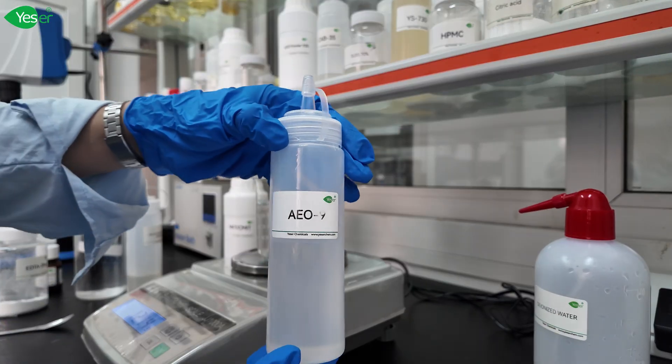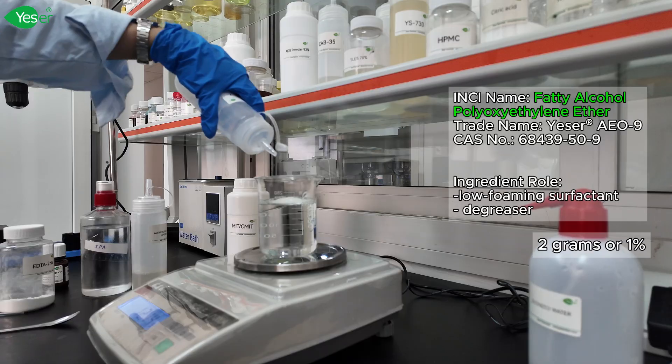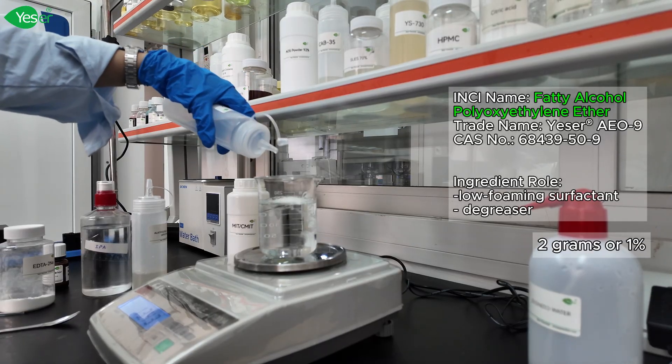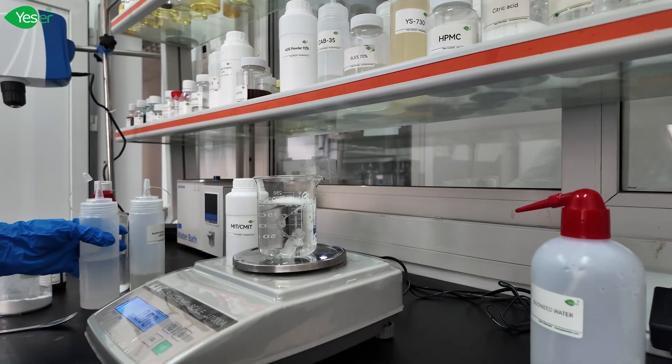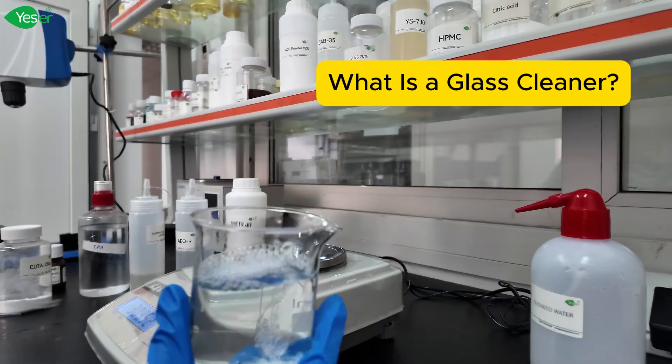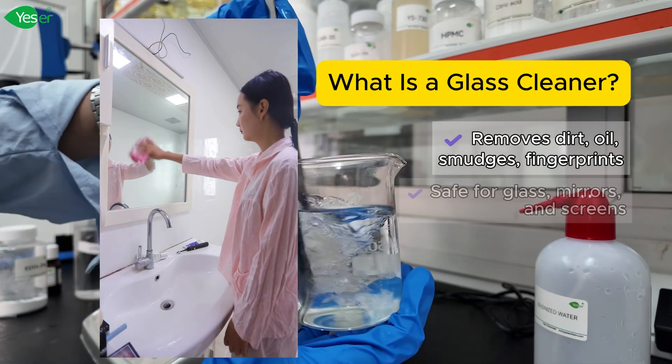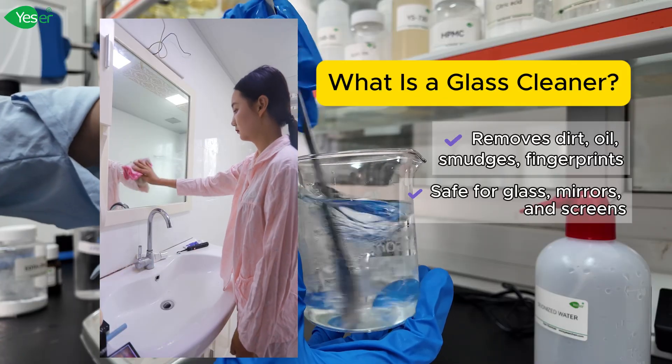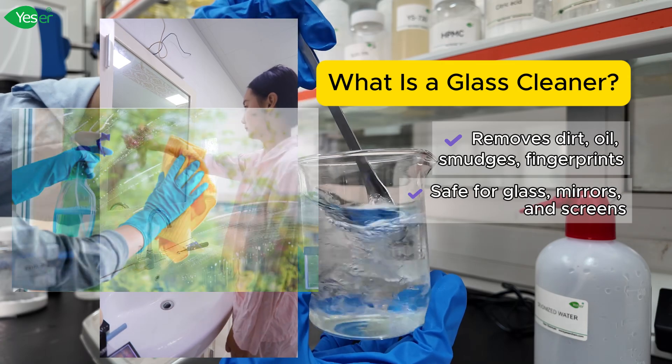What is glass cleaner? A glass cleaner is a liquid cleaning agent specifically formulated to remove dirt, grease, smudges and fingerprints from glass and other smooth non-porous surfaces. This is commonly used in cleaning the windows, mirrors, glass tables and even screens.